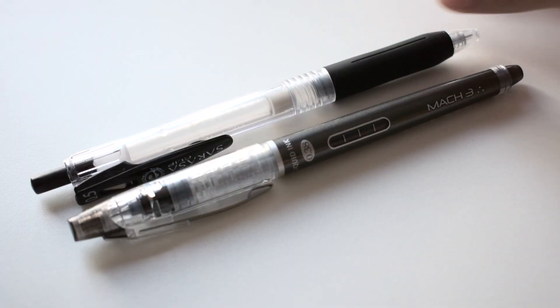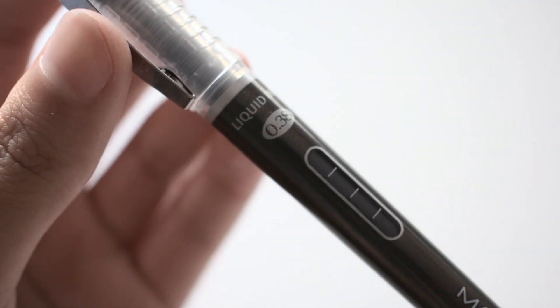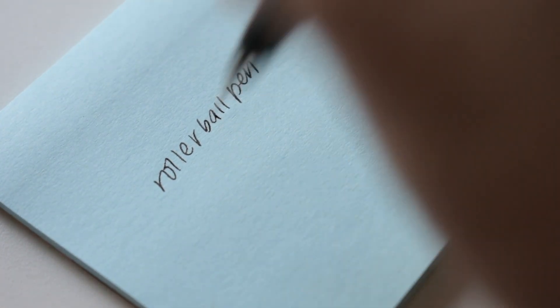One way to write faster is to use smoother pens. In general, rollerball pens are the smoothest, and then gel, then ballpoint, and felt tip tend to be the least smooth.